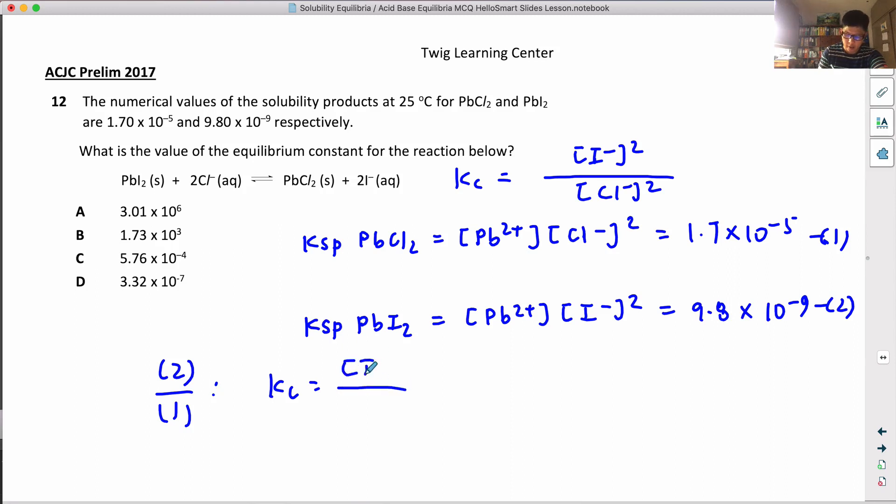So it's actually going to be I minus - can you see that? If I take 2 divided by 1, these two can actually cancel out. So it's the square over Cl minus squared. Alright, so it's 9.8 times 10 to the power of minus 9 divided by 1.7 times 10 to the power of minus 5. If you work it out nicely, 5.76 times 10 to the power of minus 4.